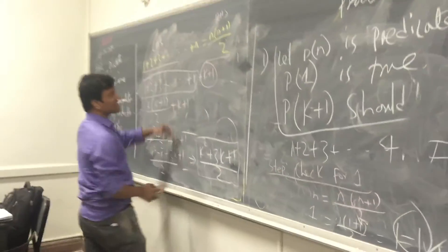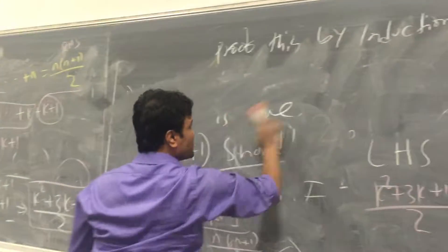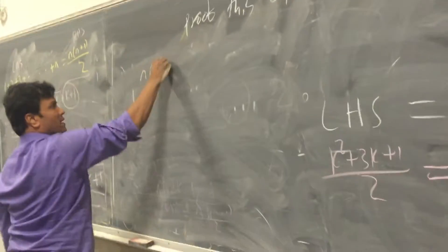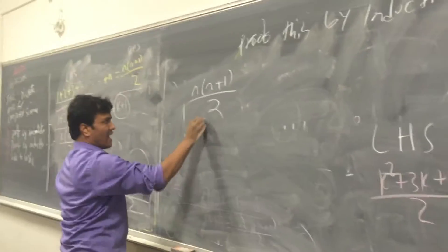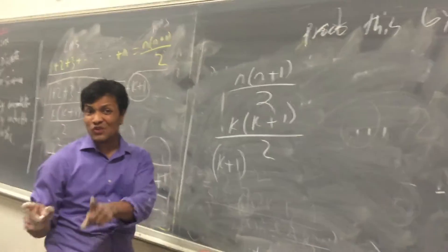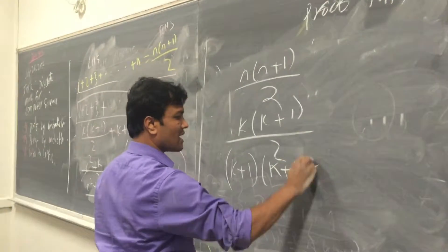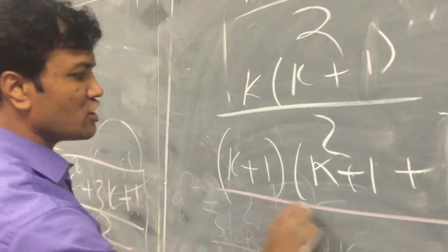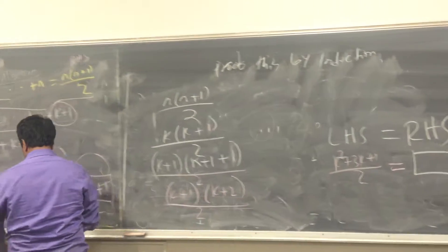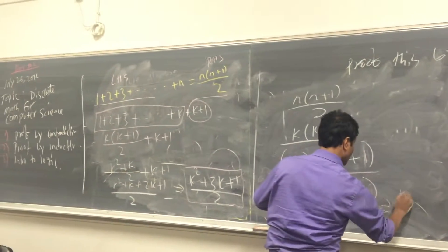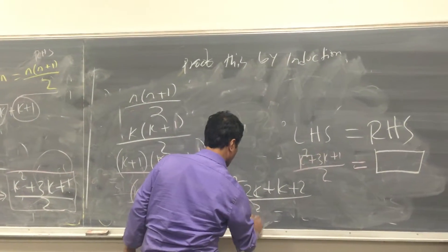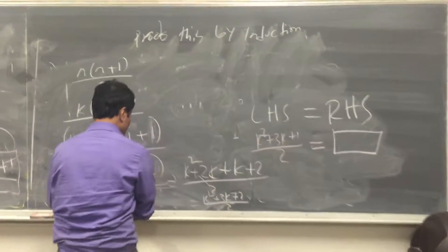Our right-hand side — the yellow one — is n times n plus 1 over 2. Remember, k replaces n, and we have to put k plus 1 because if it works for 1 it has to work for k plus 1. So the right-hand side becomes k plus 1 times k plus 1 plus 1 over 2, which is k plus 1 times k plus 2 over 2. We expand: k squared plus 2k plus k plus 2 over 2, which is k squared plus 3k plus 2 over 2. So this is our right-hand side.